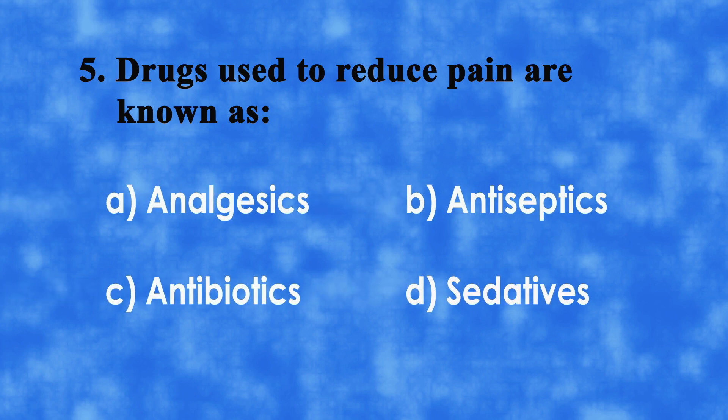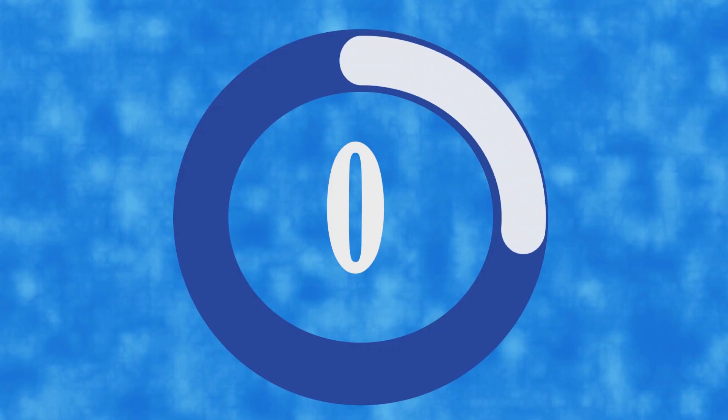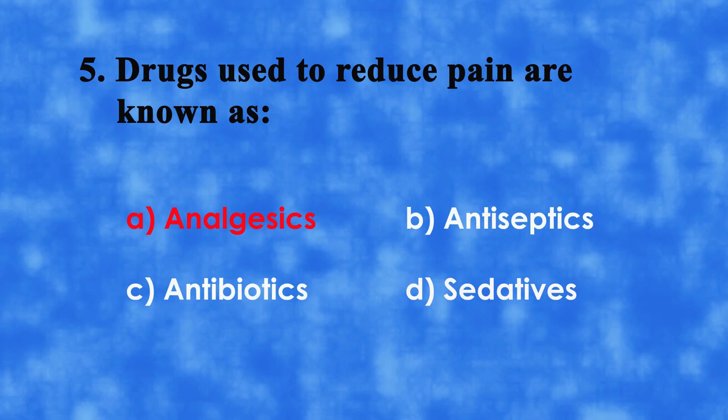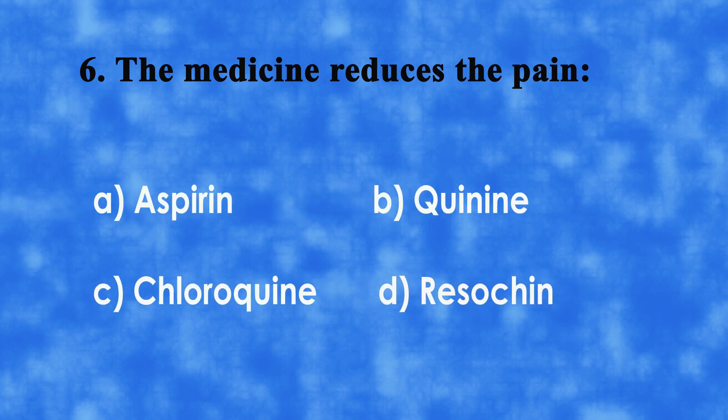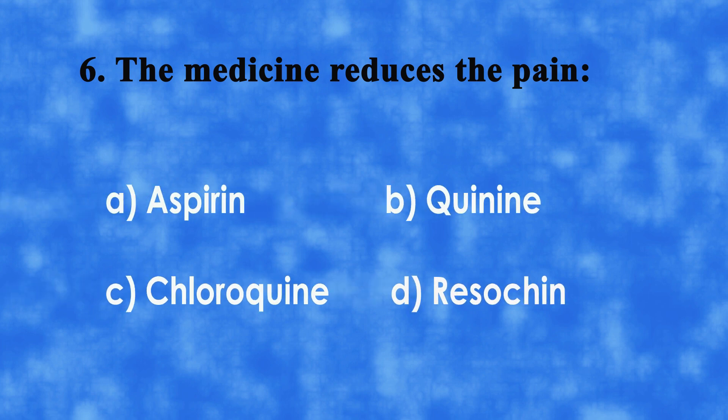No. 5: Drugs used to reduce pain are known as A. Analgesics, B. Antiseptics, C. Antibiotics, or D. Sedatives. The correct answer is A. Analgesics.